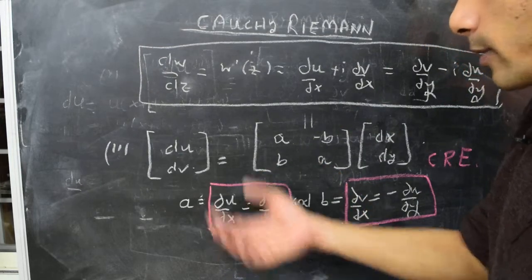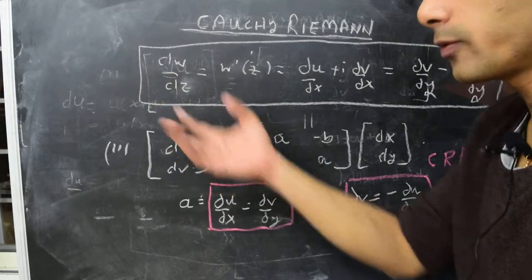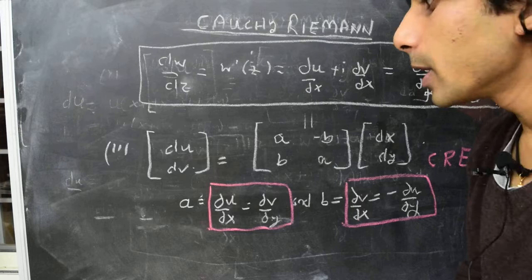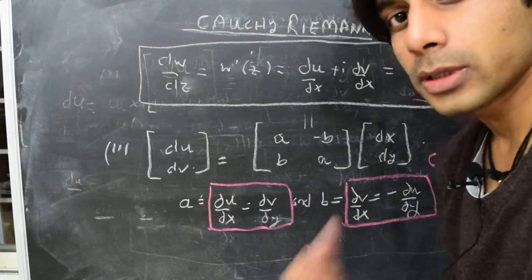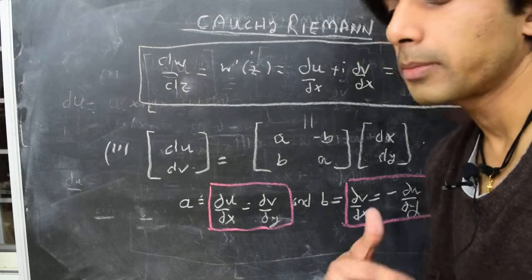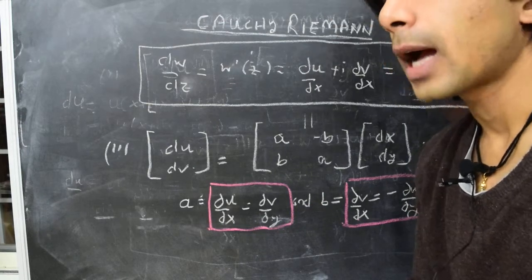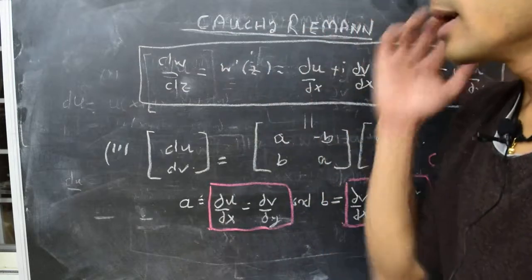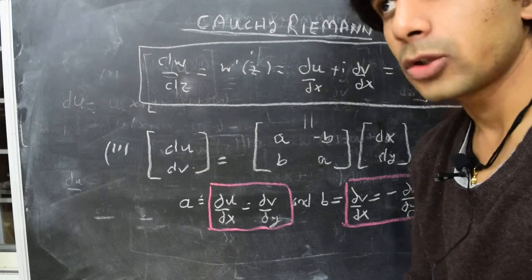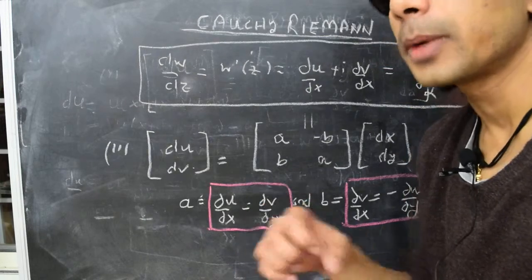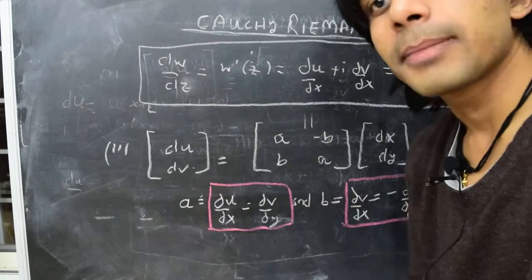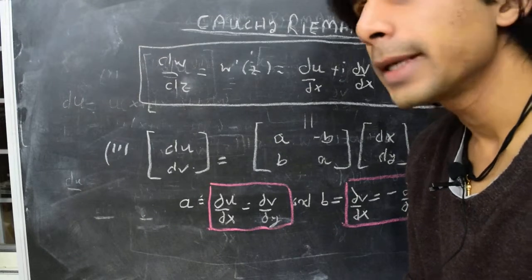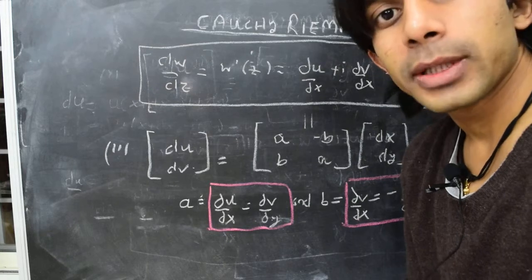Once we've calculated these partial derivatives we also know the derivative of the complex function with respect to z. The Cauchy-Riemann conditions are of fundamental importance in the study of complex functions, since a large part of that study is devoted to analytical functions. This is one way of deriving these conditions; we'll discuss another method in a future video and explicitly check these conditions for various complex mappings.